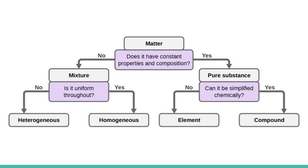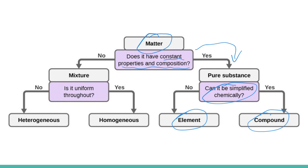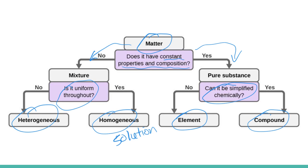If you're trying to classify matter, this flowchart really helps. You start with your matter and ask: does it have constant properties and composition? If yes, it's a pure substance — then ask, can it be simplified chemically? If no, it's made of just one thing, so it's an element; if yes, it's a compound. On the other side, if it doesn't have constant properties or composition, it's a mixture. Then ask: is it uniform throughout? If yes, it's homogeneous or a solution; if no, it's a heterogeneous mixture.